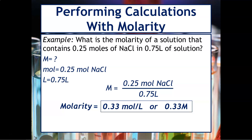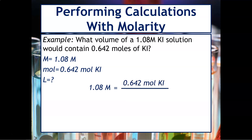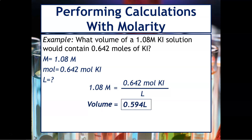Let's look at another application. What is the volume of a 1.08 molar potassium iodide solution that would contain 0.642 moles of potassium iodide? We extract all the variables: molarity is 1.08 M, moles is 0.642, and volume is our unknown. Setting up the equation: 1.08 M equals 0.642 moles over volume. To solve for volume, multiply both sides by liters, then divide 0.642 by 1.08, which gives a volume of 0.594 liters.